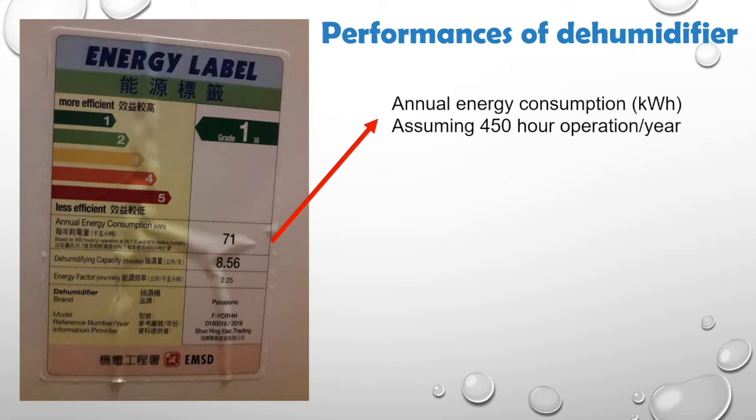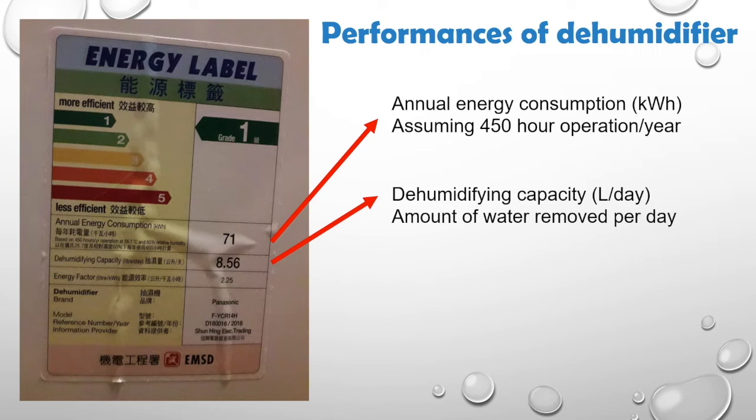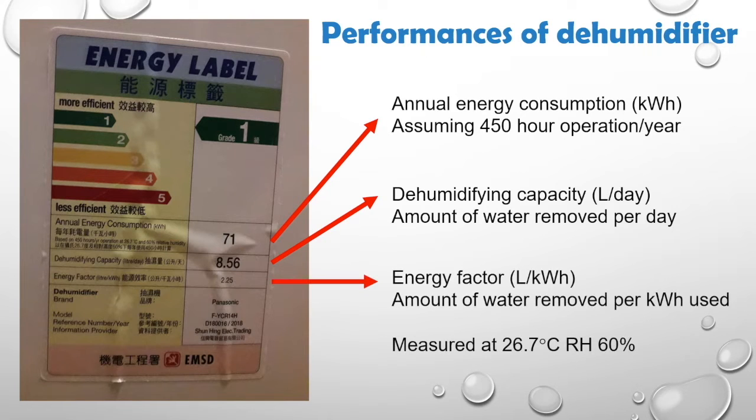The first one is the annual energy consumption, which is how much energy is used per year. Second is the dehumidifying capacity, which is the rate of water removal measured in liters of water per day. The last one is called the energy factor, which is the amount of water that can be removed per kilowatt hour.